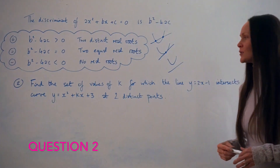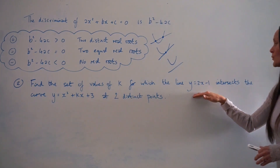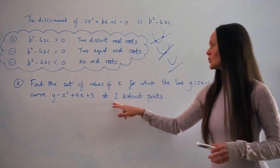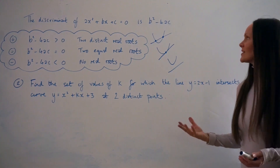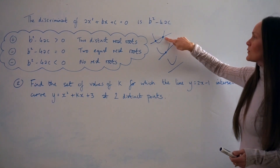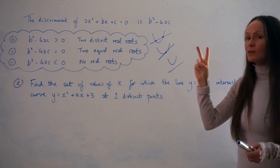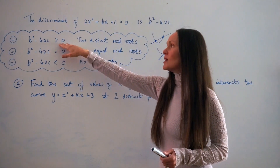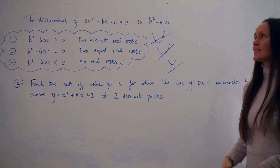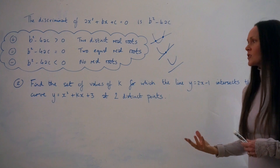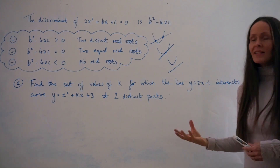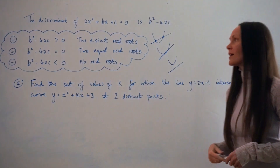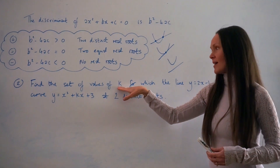In question 2, it says: find the set of values of k for which the line y equals 2x minus 1 intersects the curve y equals x squared plus kx plus 3 at two distinct points. Looking at a sketch, they would intersect in two different places, meaning two distinct real roots. So when you work out the discriminant, it would be positive — greater than zero. You solve the simultaneous equations, work out the discriminant, and then write down an inequality with the discriminant greater than zero.